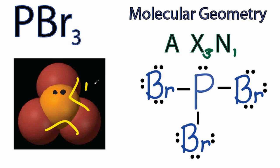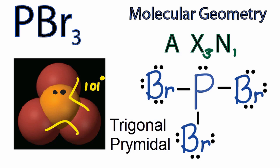It turns out that it's really, experimentally, about 101 degrees. So that's the molecular geometry for PBr3. It is trigonal pyramidal and it has bond angles of 101 degrees.